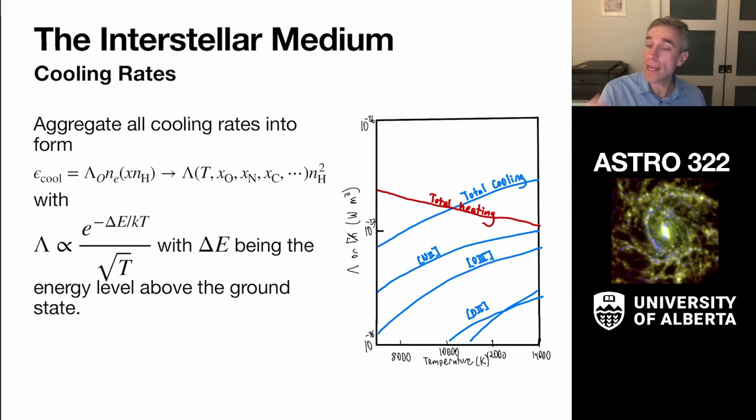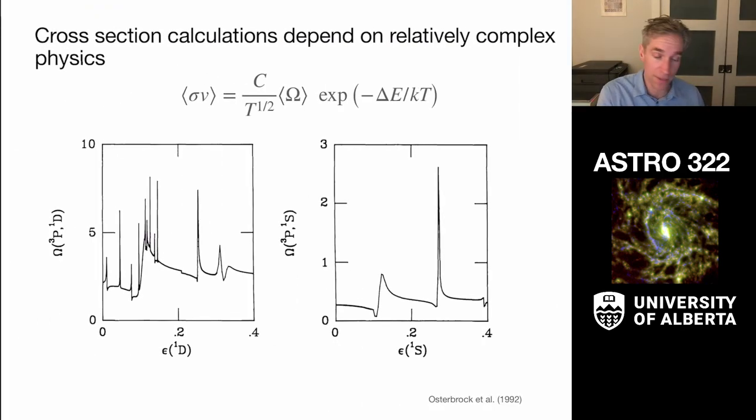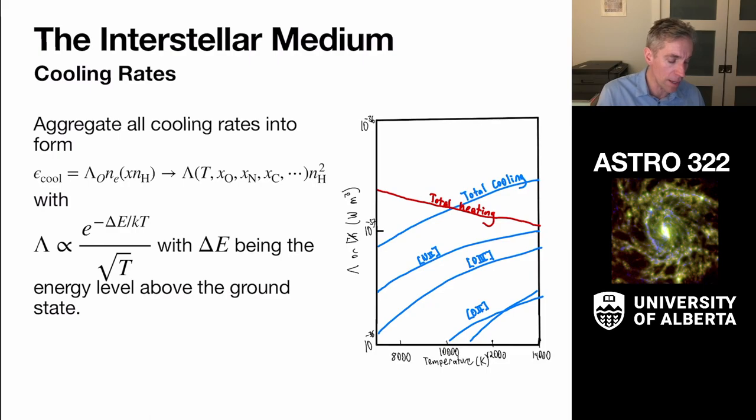that describes the interstellar medium times the product of the density. Now, because of that dependence in the dependence in the quantum mechanics of this and the statistical mechanics of it, there is some significant temperature dependence to this.